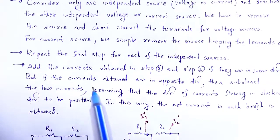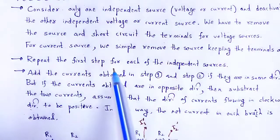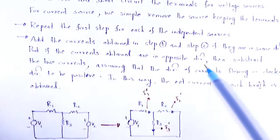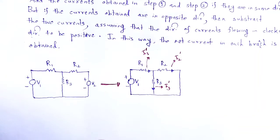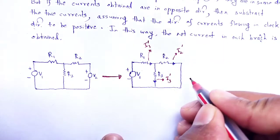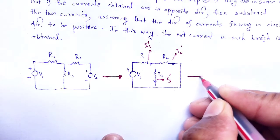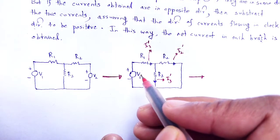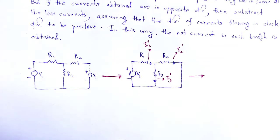Again, the next step is to repeat the first step for each of the independent sources. We replace it so that the first voltage source is inactive and the second voltage source is active.